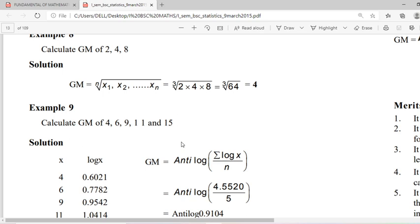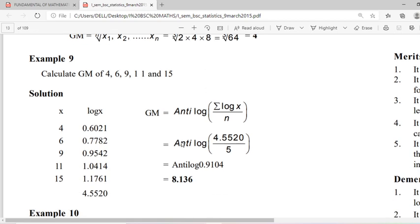We can multiply 2 into 4 into 8 and take the cube root, that is cube root of 64 that equal to 4. Another example is calculate geometric mean of 4, 6, 9, 11 and 15.